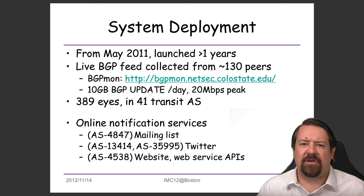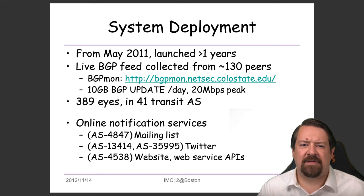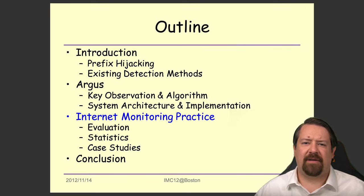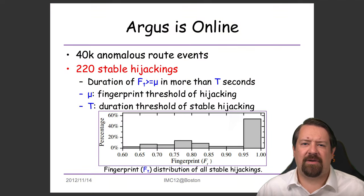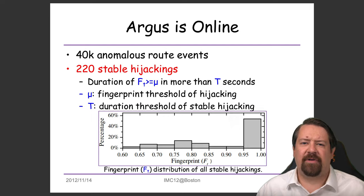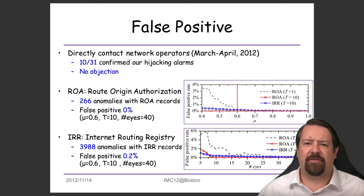Before making this presentation, the authors ran the system for over a year and utilized almost 400 looking glasses as eyes, although concentrated in only 41 transit ASs. During that time, they saw about 40,000 anomalous route events, of which about 220 were classified as stable hijackings. Looking at the fingerprint of these events, the majority had a strong fingerprint between 0.95 and 1. To confirm whether events were true, they contacted network operators and got 10 confirmations with no rejections of their hijacking assertions.